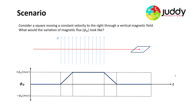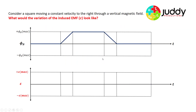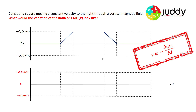Now for a second scenario: consider a square moving at a constant velocity to the right through a vertical magnetic field. What would the variation of the induced EMF look like? The same skills as our previous example apply, and this time they're probably easier to apply. The EMF is proportional to the negative rate of change of the flux, or equivalently, the negative gradient of the flux-time graph.